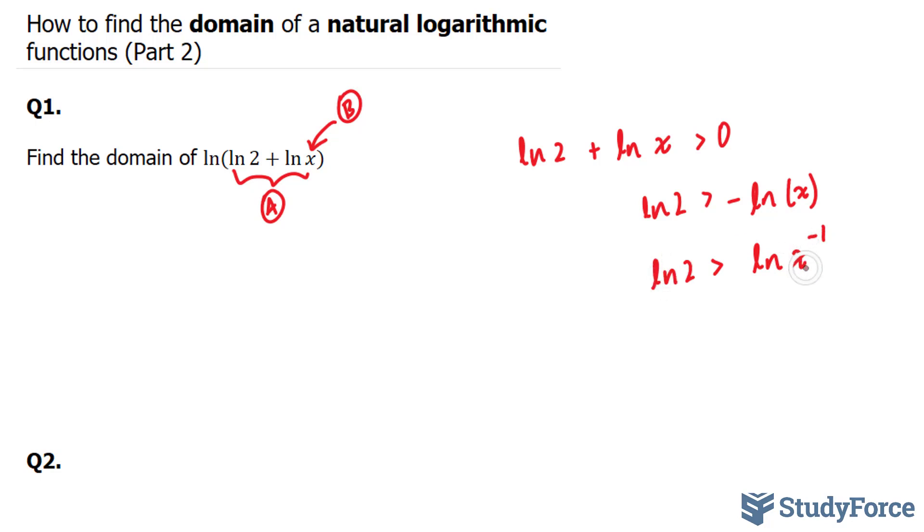Now that I have a ln on both sides, what I can do is I can raise both the left and the right side as powers to the base e. And by doing that, look what happens. This e and this ln cancel, and you end up with 2 on the left side. And on the right side, you end up with x to the power of negative 1.